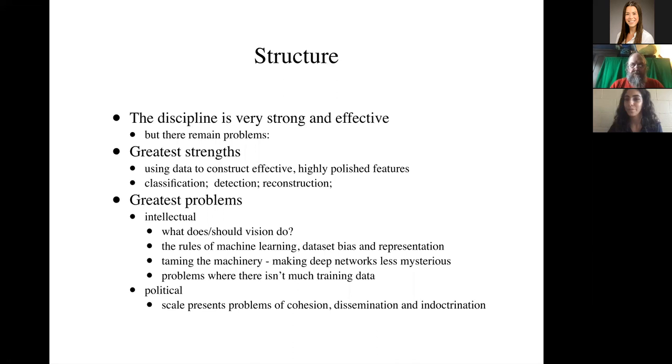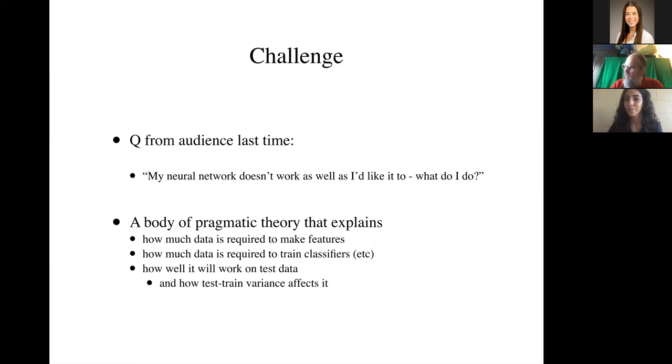Okay, so the next intellectual problem we have is we need to know how to tame the machinery. We are very good at doing things with deep networks, but they are in fact mysterious. Here is one challenge. I had a question from an audience last year when I gave a version of this talk, and the question was essentially, my neural network doesn't work as well as I'd like it to. What do I do? What do I do now? And the answer to the question was, you know, go ask Yann LeCun, it's his fault. We really don't have a body of pragmatic theory that explains how well it should work, how much data is required to make features, how much data is required to get classifiers to behave themselves, and how well things will work on test data. In particular, we don't have a body of theory that says, look, I'm in trouble right now, what do I do? Do I collect more data? Do I fool around with my network architecture? Do I do both? That's one challenge.